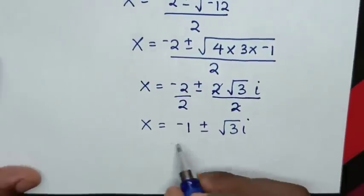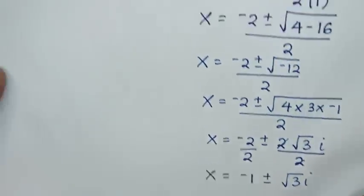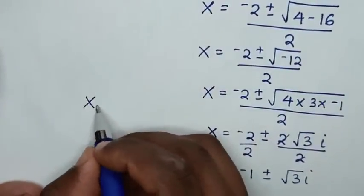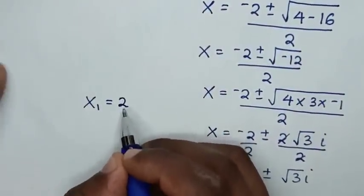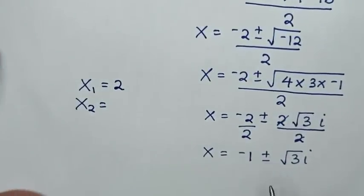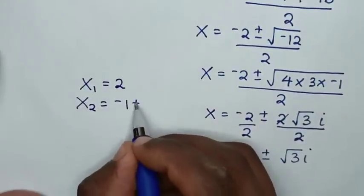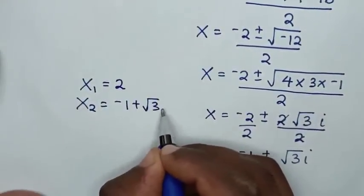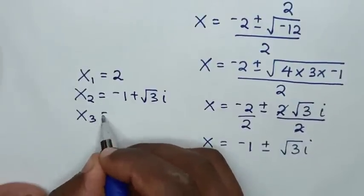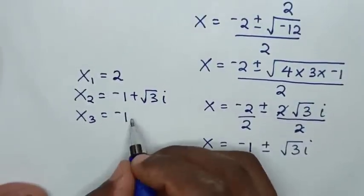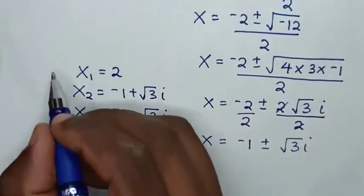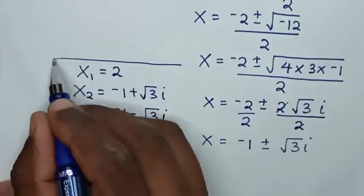So from here we have three values of x. x₁ = 2. x₂ = -1 + √3 i. And x₃ = -1 - √3 i. These are all the values of x.